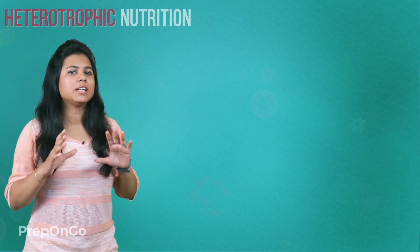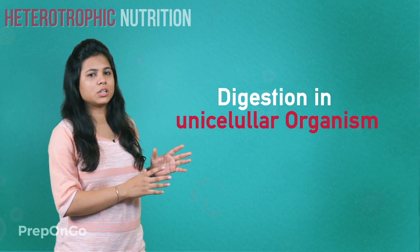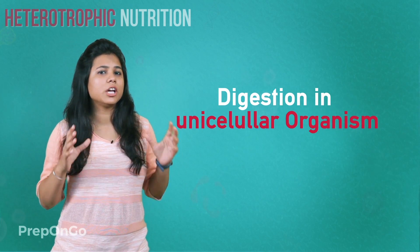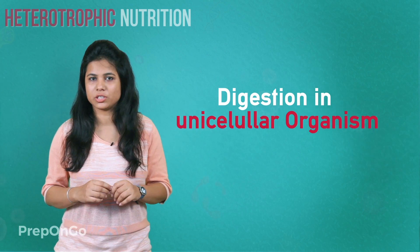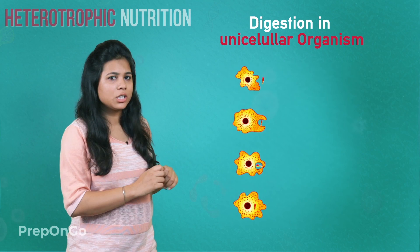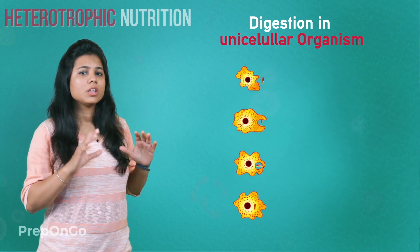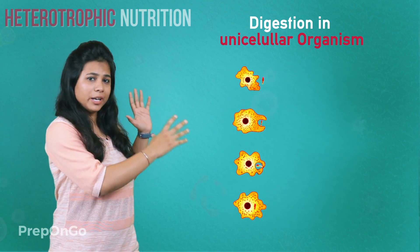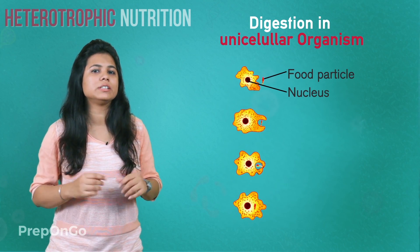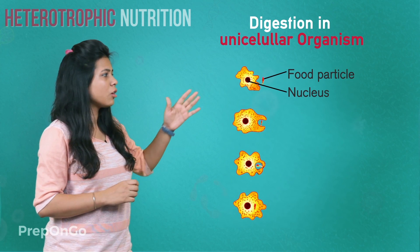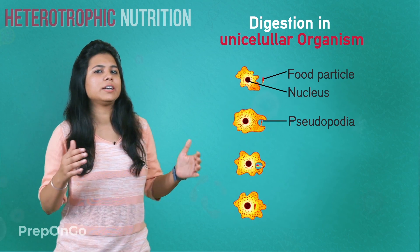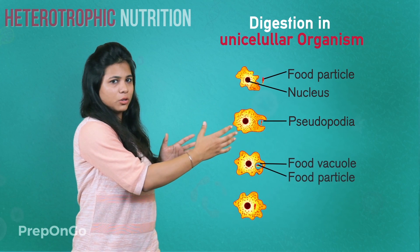Now let's see the digestion process in unicellular organisms. These unicellular organisms use their whole body for the process of digestion. Take amoeba for example — it is a unicellular and primitive organism. Whenever it sees a food particle, it uses finger-like projections on its cell called pseudopodia. Wherever the food particle is, the pseudopodia get fused with it, forming a food vacuole.